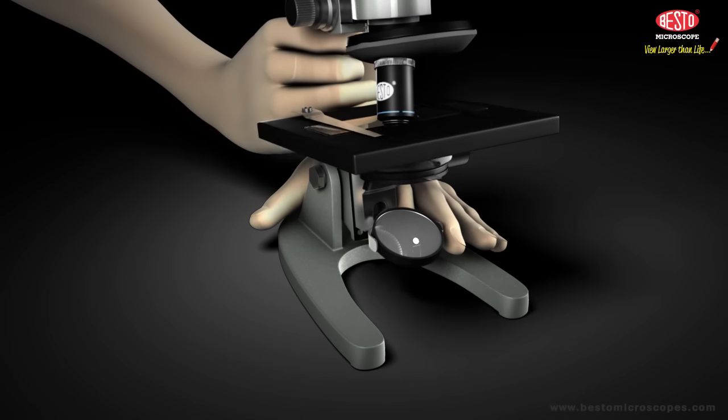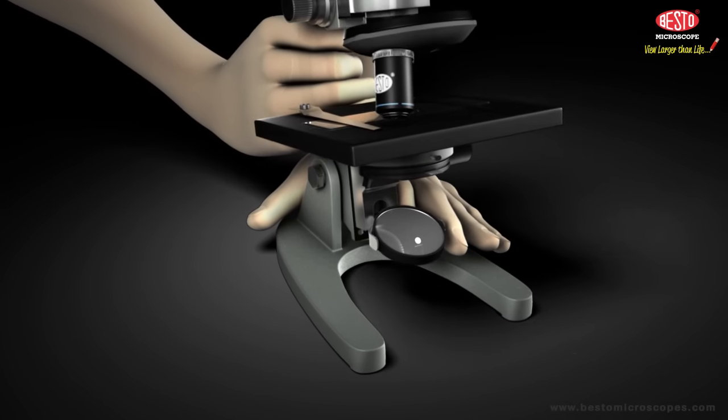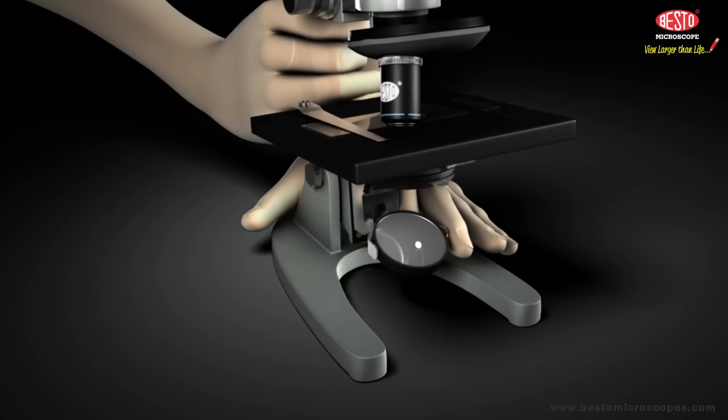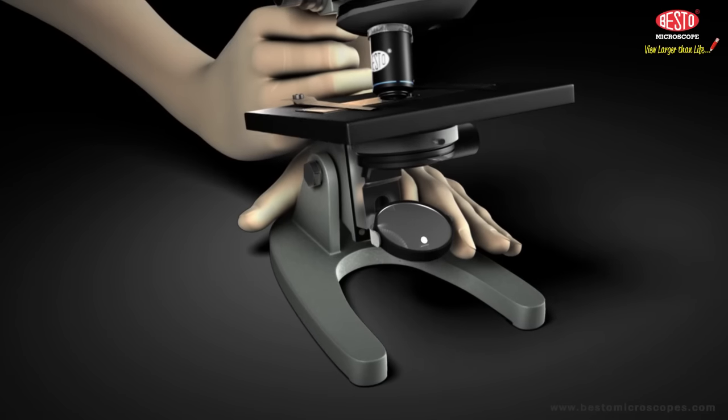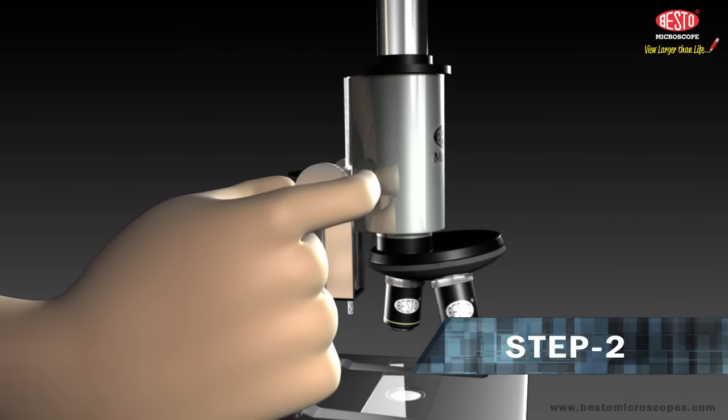Place the microscope on a table away from the edge. Move it to a position in which you can look comfortably through the eyepiece. You may want to sit on a chair or stool. Step 2: Make sure low power objective is in place over the hole in the stage.